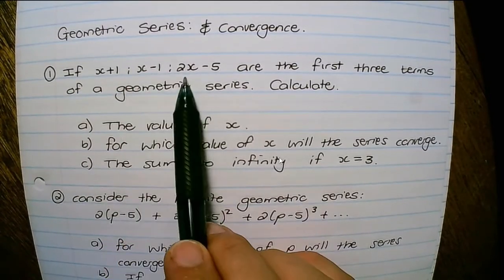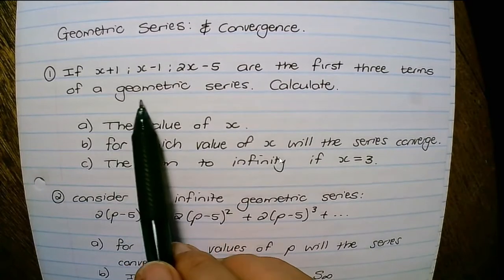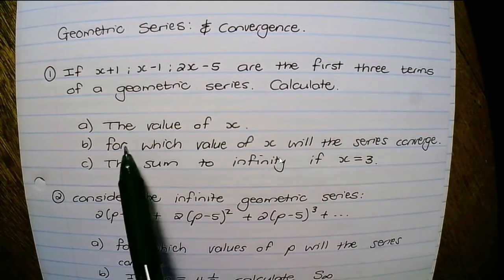x minus 1, and 2x minus 5 are the first three terms of a geometric series. Calculate the value of x.